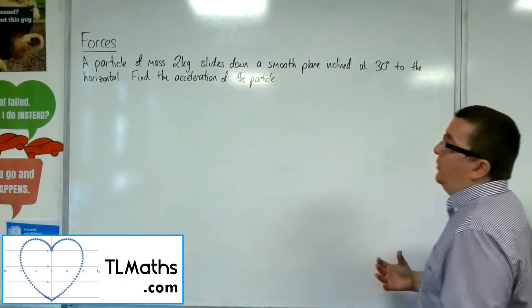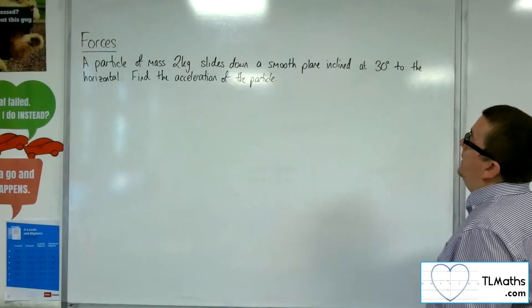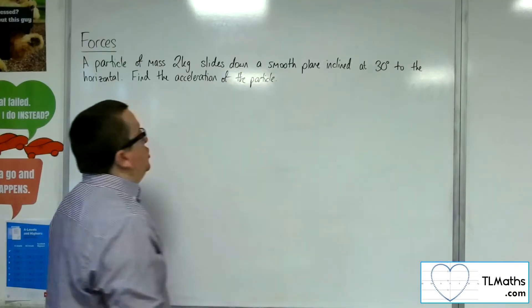So in this video, we've got a particle of mass 2 kilos sliding down a smooth plane inclined at 30 degrees to the horizontal. Find the acceleration of the particle.